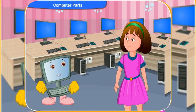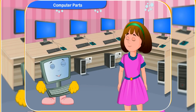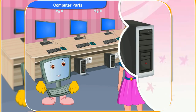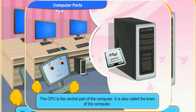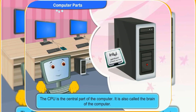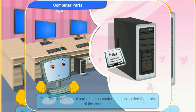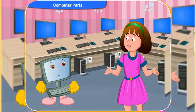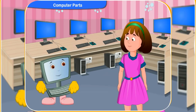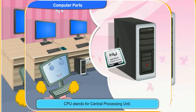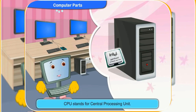What is the CPU? It looks like a big box. The CPU is the central part of the computer. It is also called the brain of the computer. The CPU tells the computer what to do. CPU stands for Central Processing Unit. It is the most important part of the computer.